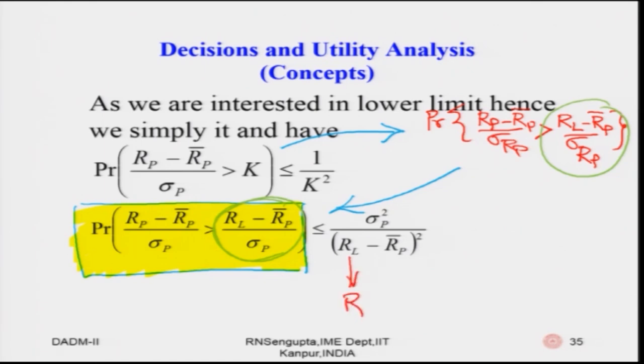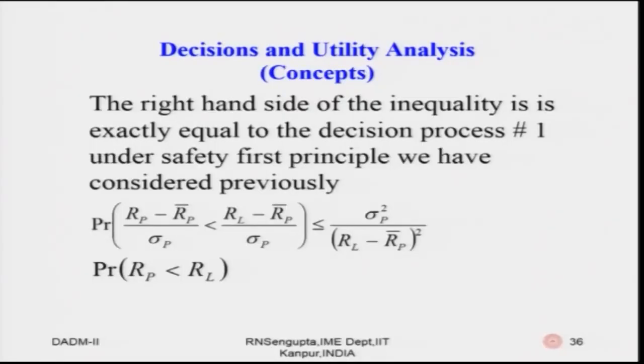R_L technically would be R_F — the risk-free interest rate, which comes from outside. So you can immediately find the bound k, then k², and solve the problem accordingly. Higher or lower k will give you how to rank decisions from highest to lowest or lowest to highest depending on your main criteria. The right-hand side of the inequality corresponds exactly to decision process one, which is minimization of the probability of R_p less than R_L under the safety first principle.